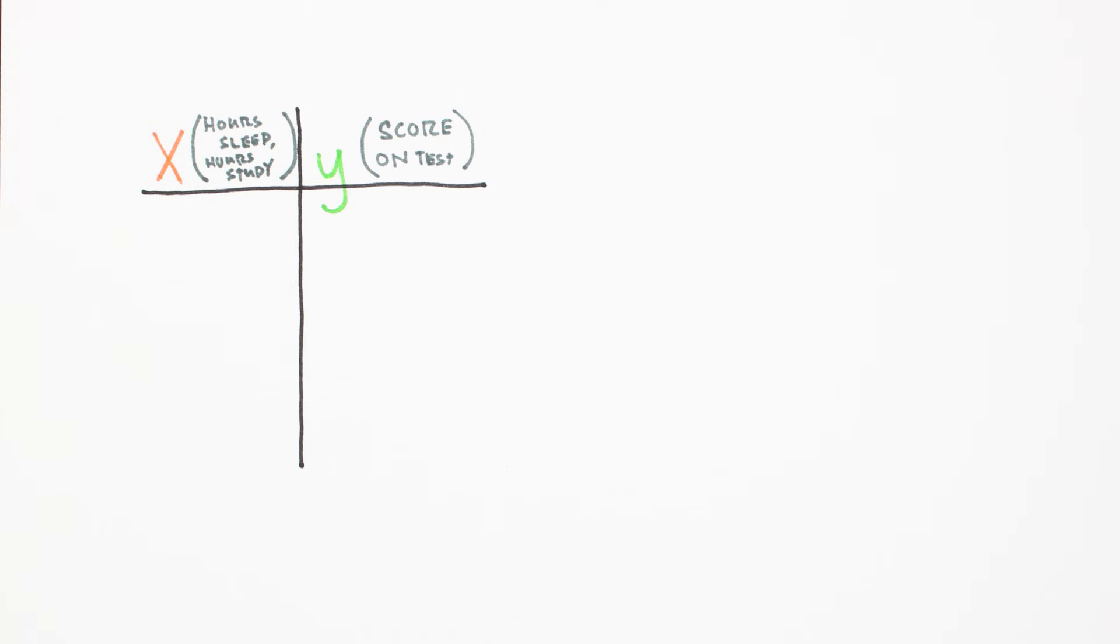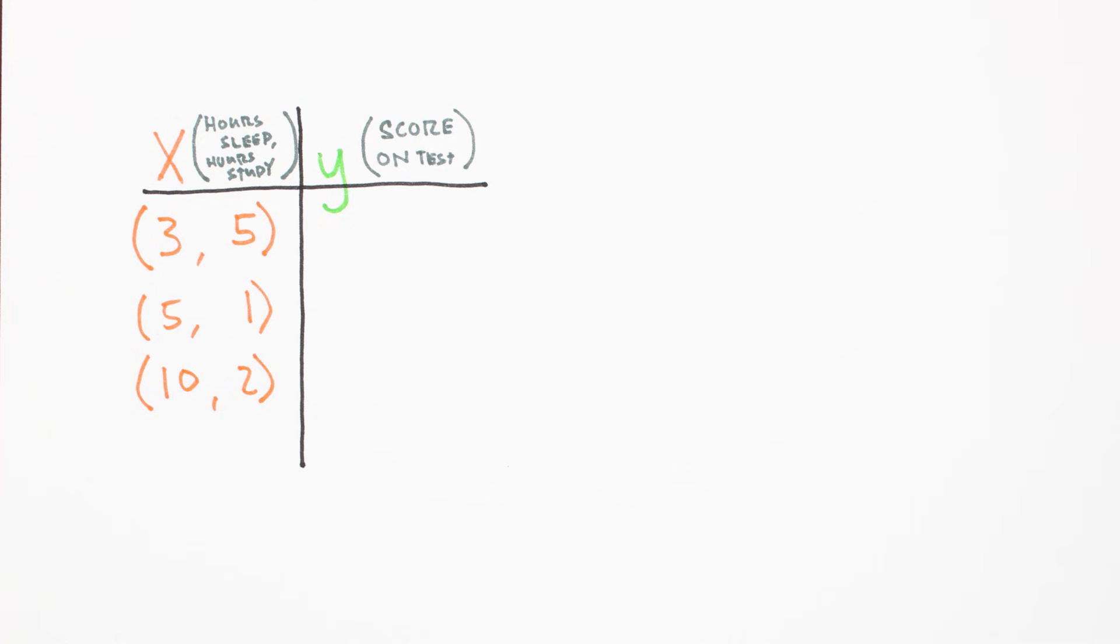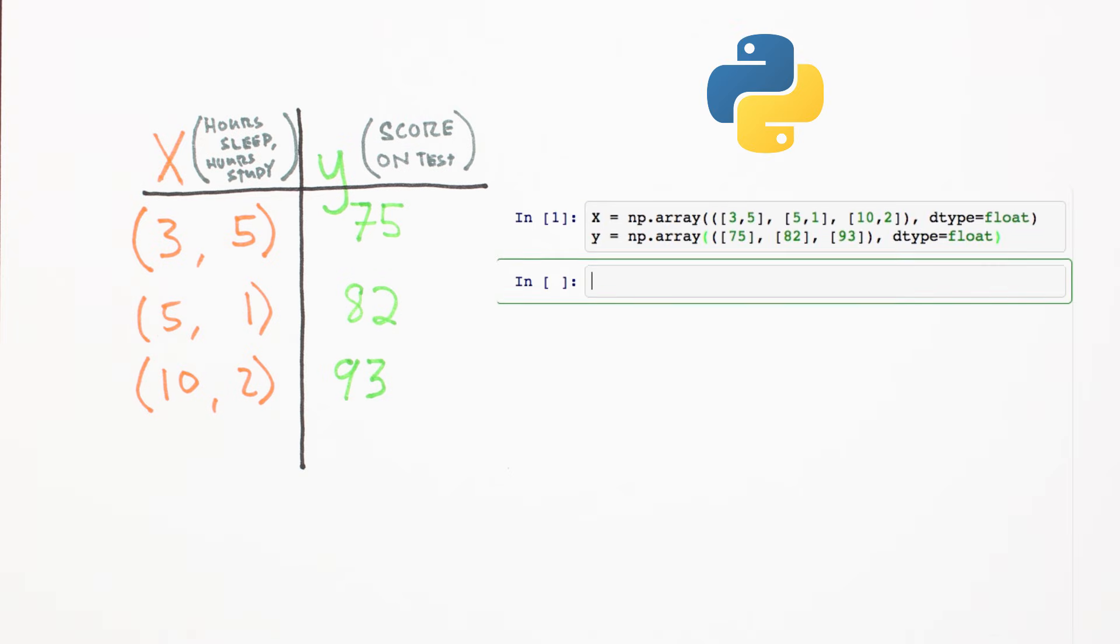To use a machine learning approach, we first need some data. Let's say for the last three tests you recorded your number of hours studying, your number of hours sleeping, and your score on the test. We'll use the programming language Python to store our data in two-dimensional NumPy arrays.